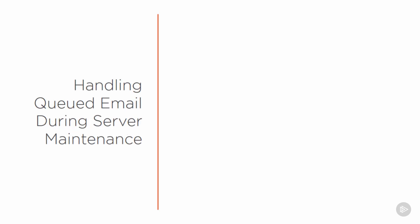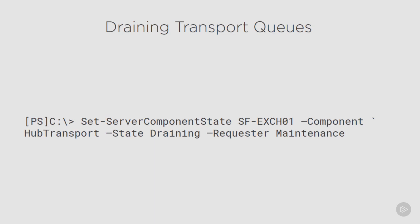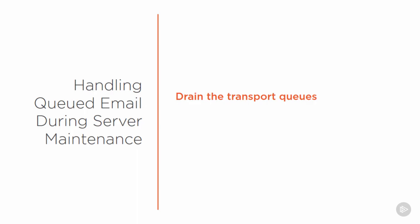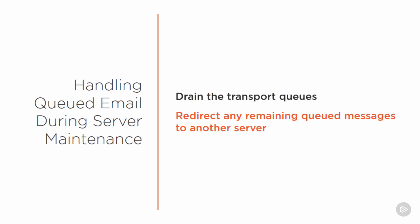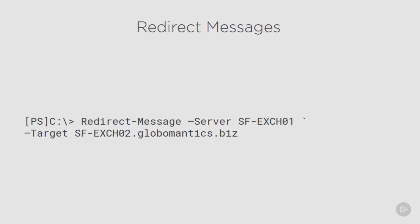Another scenario in which queued emails need to be handled is server maintenance. If you're planning to take down an Exchange server for maintenance, that server might have mail in its queues that is still retrying delivery. So first you need to drain the transport queues, which basically means telling Exchange to keep processing existing email but stop accepting new mail into that queue. To drain a transport queue, we use the Set-ServerComponentState cmdlet, set the component HubTransport into a state of draining, and use the requester maintenance. Then you also need to redirect those queued messages to another server that can continue trying to deliver them, using the Redirect-Message cmdlet, specifying the server we're redirecting messages from and a target server to redirect the messages to.